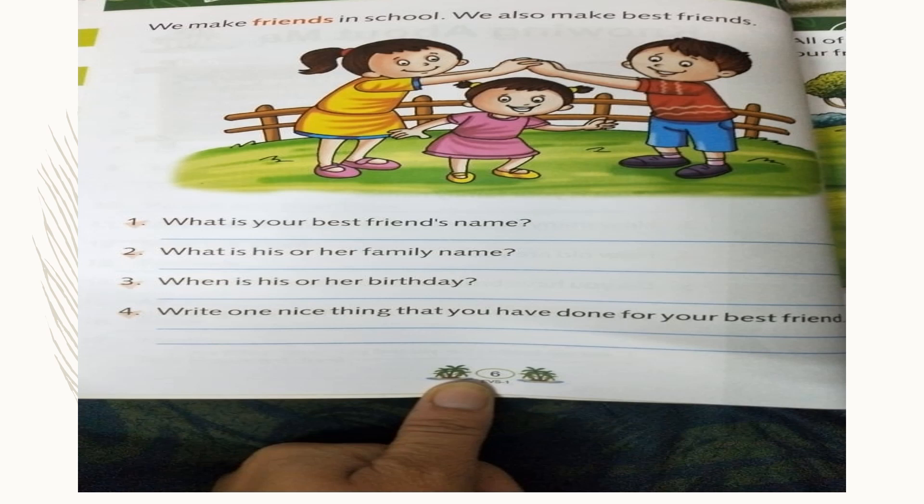Now write one nice thing that you have done for your best friend. There are many things you can do — you can help them complete their work, share different kinds of things, play with them, or spend time with them. Let me ask Devraj: what is the best thing you have done for your best friend? He gave his friend a pencil one day when he forgot to bring his pencil box. Very good! There are a lot of little things you can do to help your friends and make them happy. You should care about your friends and your best friend.